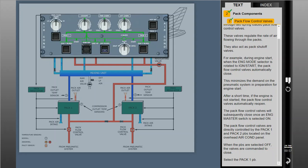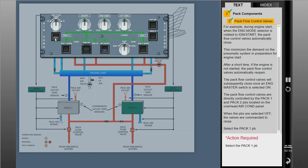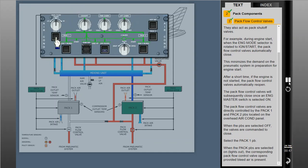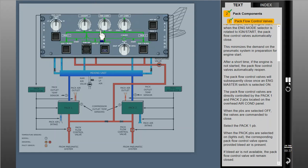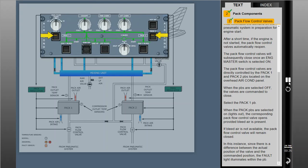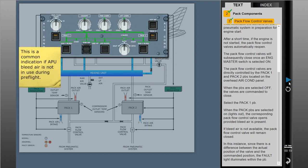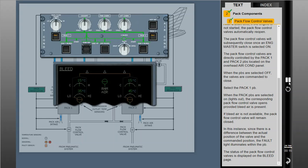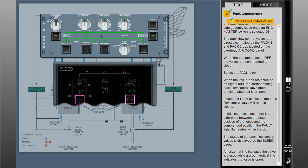When the PAC push buttons are selected on — lights out — the corresponding PAC flow control valve opens provided bleed air is present. If bleed air is not available, the PAC flow control valve will remain closed. In this instance, since there is a difference between the actual position of the valve and the commanded position, the fault light illuminates within the push button. The status of the PAC flow control valves is displayed on the bleed page. A horizontal line indicates the valve is closed, while a green vertical line indicates the valve is open. Airflow as a result of valve modulation is depicted as an analog pointer above the valve.